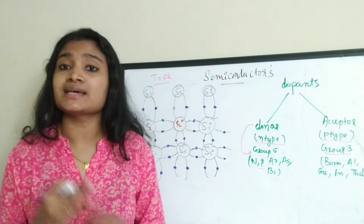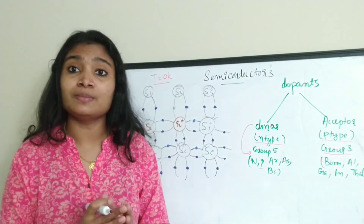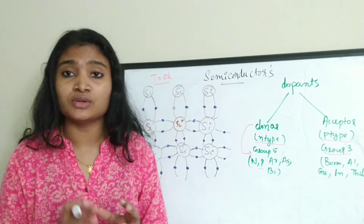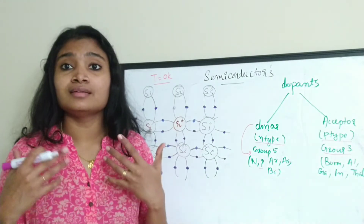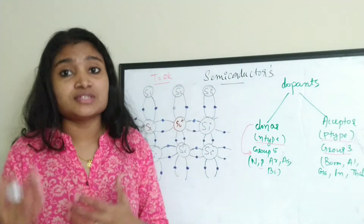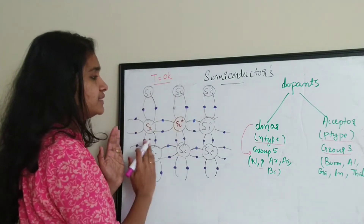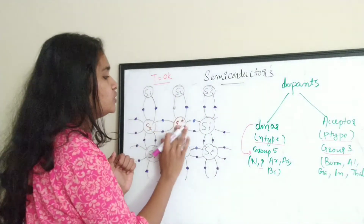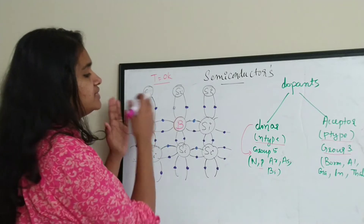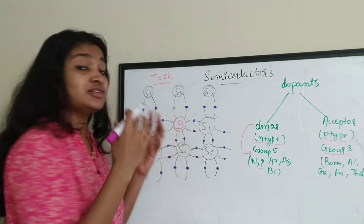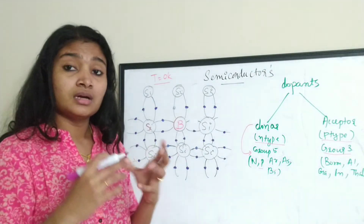Now let's consider acceptor impurities, which are Group 3 elements with only 3 electrons in the outer shell. There is a scarcity of 1 electron in the outer shell to complete a covalent bond when introduced into the silicon crystal structure. For example, if we replace a silicon atom with boron, the boron has 1, 2, 3 electrons in the outer shell and needs 1 more electron to complete its bond.